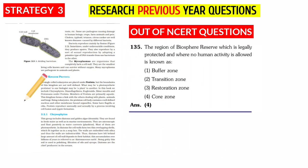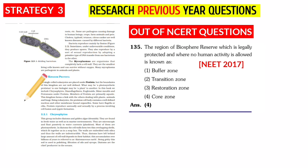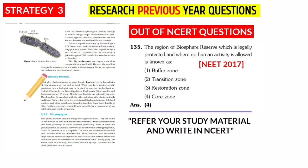For example, this question: the region of a biosphere which is legally protected and where no human activity is allowed is known as — you will find it in NCERT. If you study NCERT, you can answer this question. You can also refer study materials alongside NCERT. The answer options are Buffer Zone, Transition Zone, Restoration Zone, and Core Zone — and you will find it in NCERT. Research previous year questions and score Biology marks.